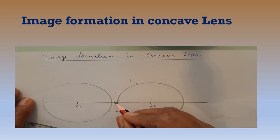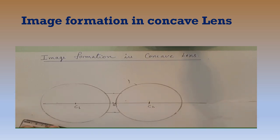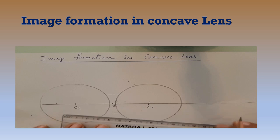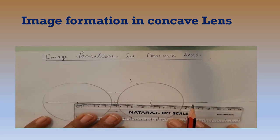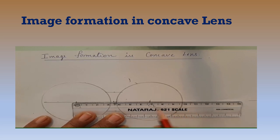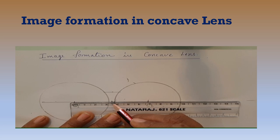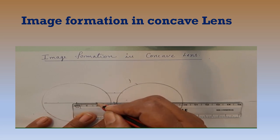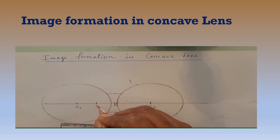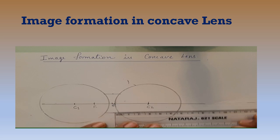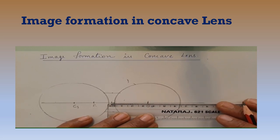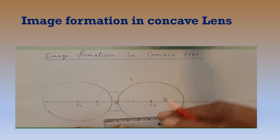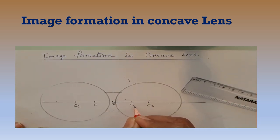The middle point is the optical center or optic center of the lens. The next step is to mark the focus. We measure the distance between O and C1 — it is 3.4 centimeters. Half of that, which is 1.7, is marked from O. That will be the focus F1. From O to C2, the distance is also 3.4, and half of that, 1.7, gives us F2. So we now have F1, F2, C1, and C2 marked.